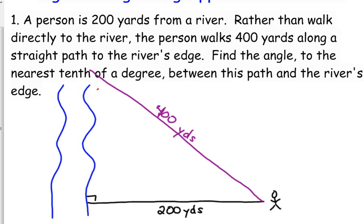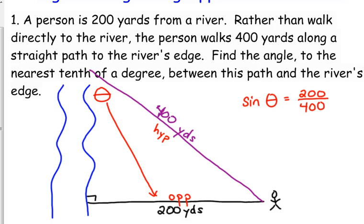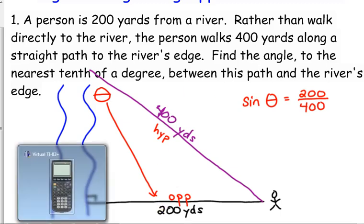So what we're really looking for is this angle right here. So in relation to that angle and the way that our right triangle is set up, the 200 is opposite, the 400 is the hypotenuse. So we are going to use which trig function? Sine. And yes, we are going to use the inverse because we are looking for an angle. We're not looking for one of the sides.